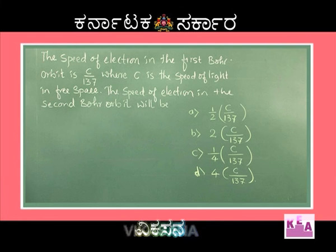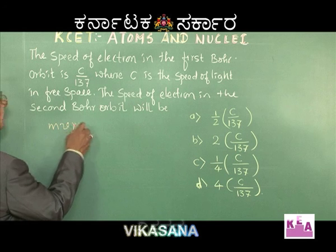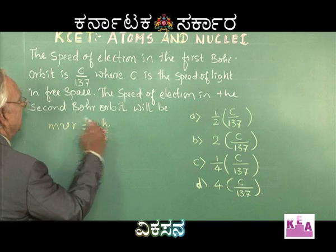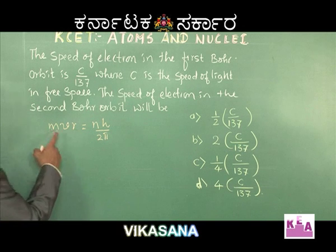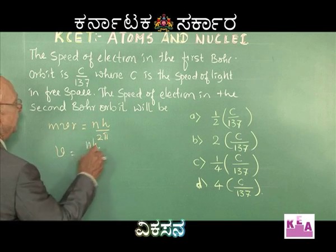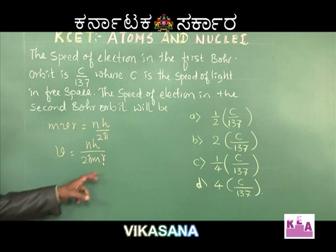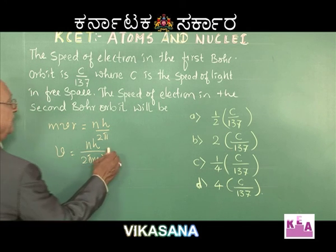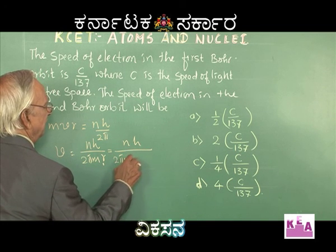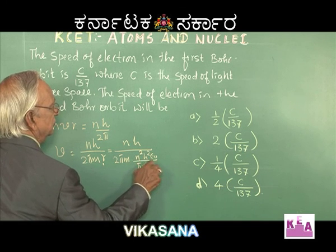Instead of directly using the formula, we will spend a little time and recall the equation. We have the quantum condition mvr = nh/2π as the first equation. From this we need to find speed v, so v = nh/(2πmr). Now r is the radius of the Bohr orbit. Substituting r, we get 2πm × n²h²ε₀/(πmze²).